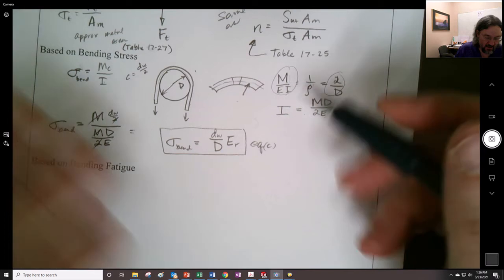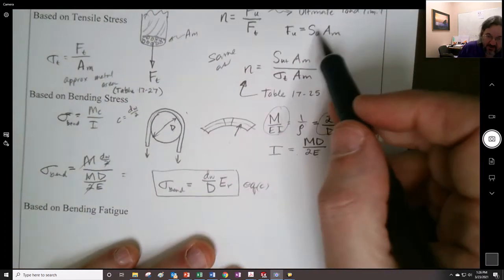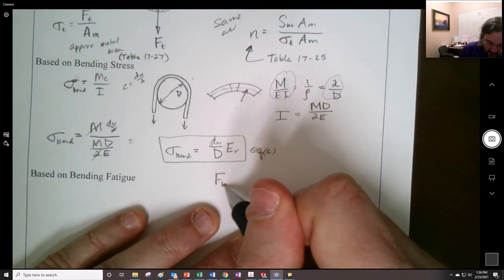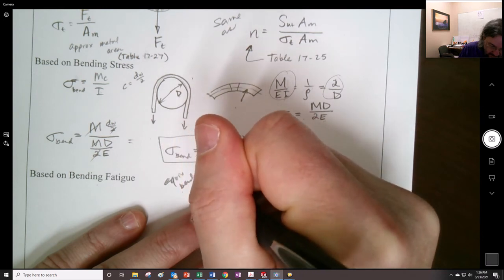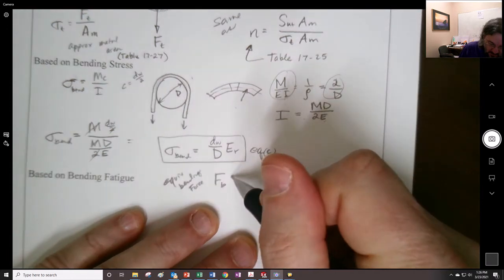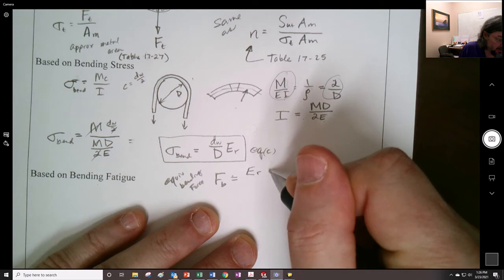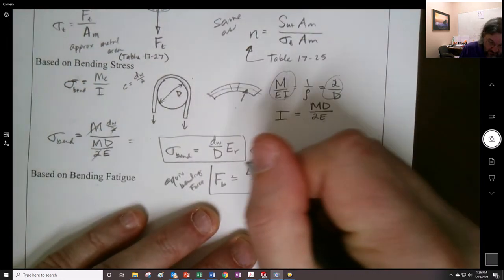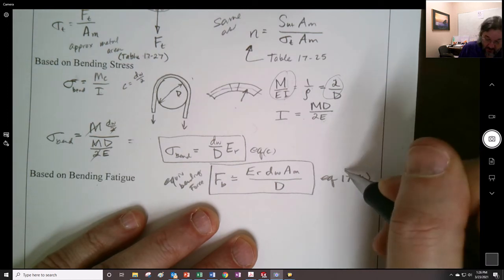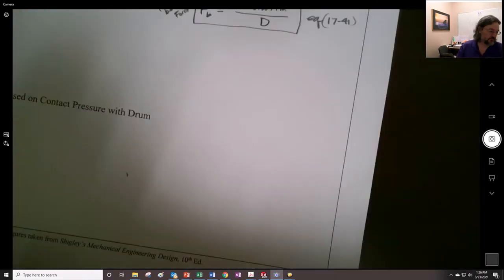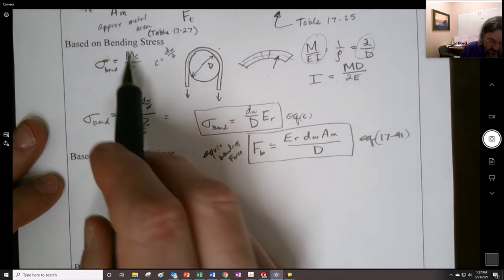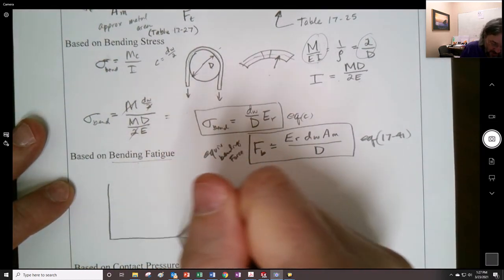But we could also say that we could have an equivalent force right here. We could have an, because they like to do things in terms of force. So we have the ultimate force, we have the tensile force, and we could also have the FB is the equivalent bending force. So they write this out right here as ER times DW AM divided by capital D right there. And so that's equation 1741.